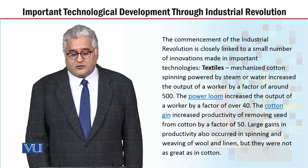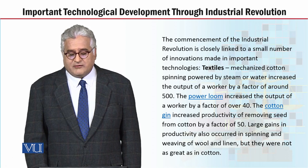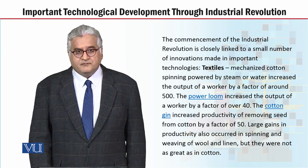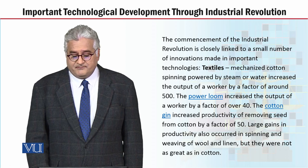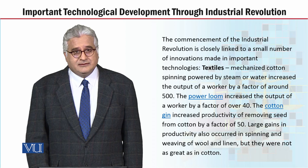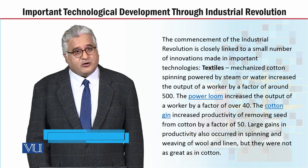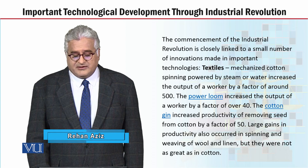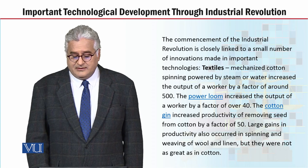What happened in the textiles? Mechanized cotton spinning powered by steam or water increased the output of a worker by a factor of around 500. The power loom increased the output of a worker by a factor of over 40. The cotton gin increased productivity of removing seed from cotton by a factor of 50. Large gains in productivity also occurred in spinning and weaving of wool and linen, but they were not as great as in cotton.